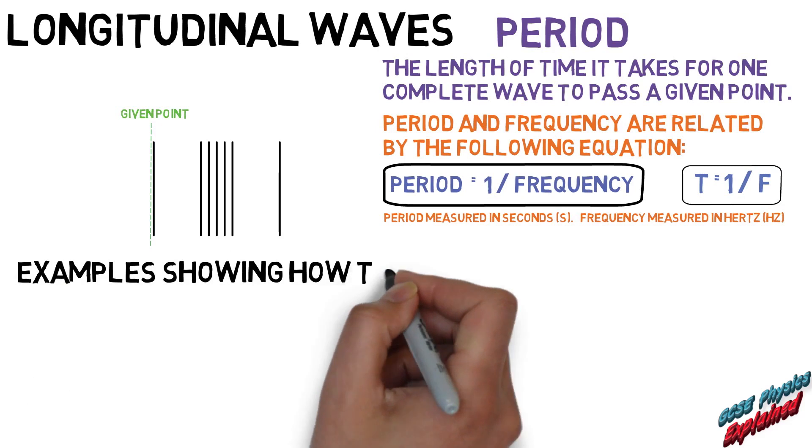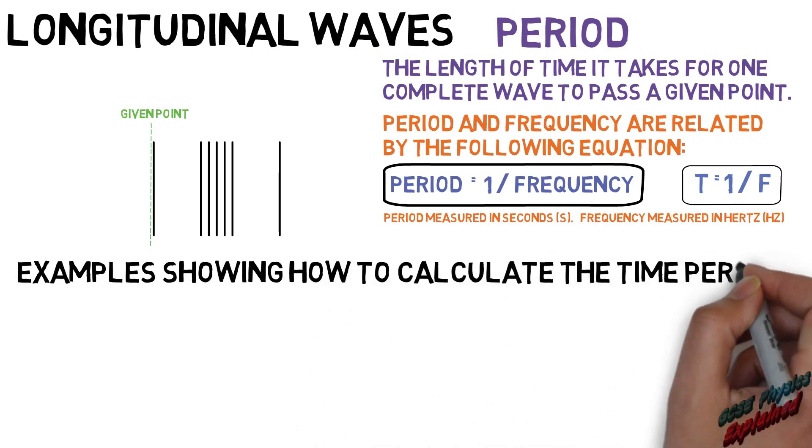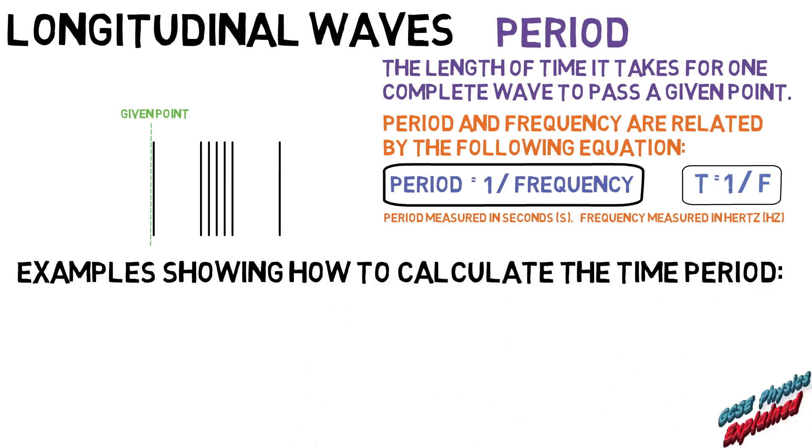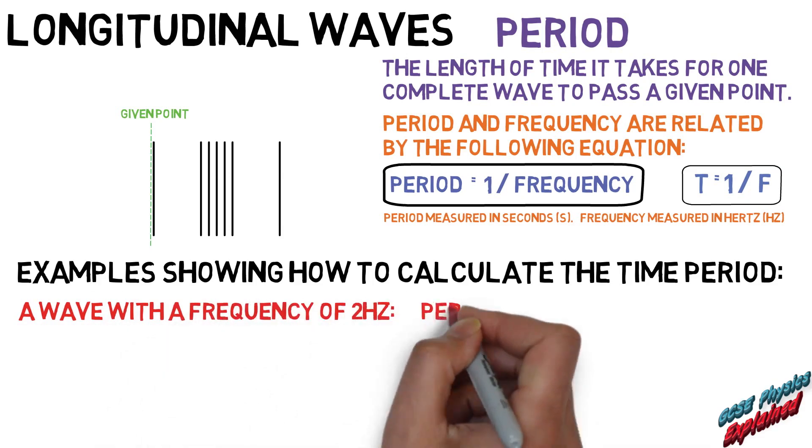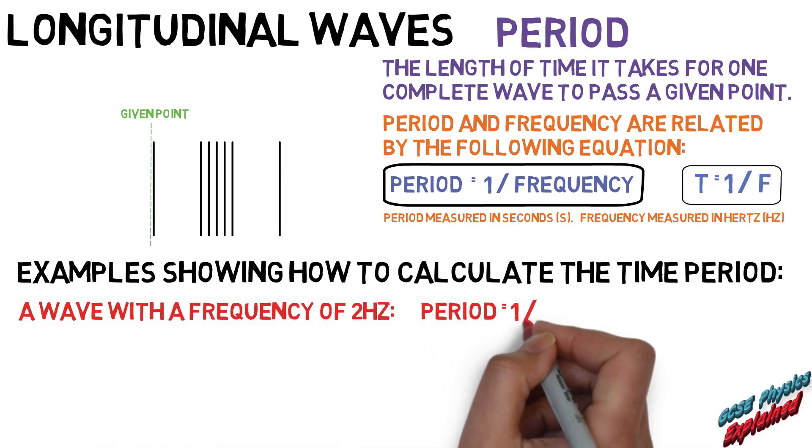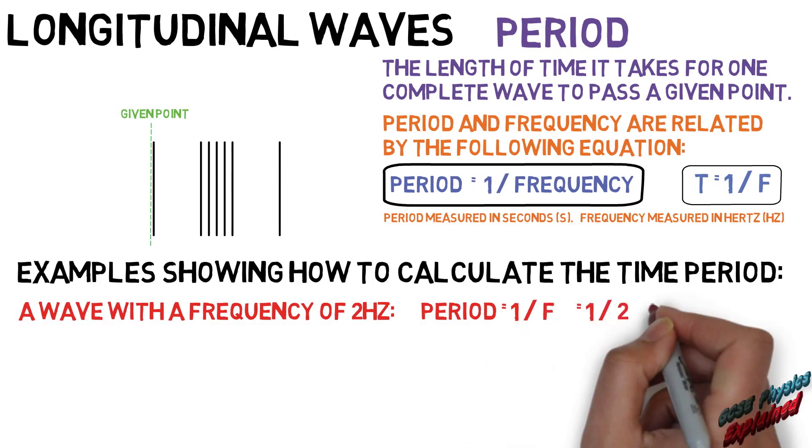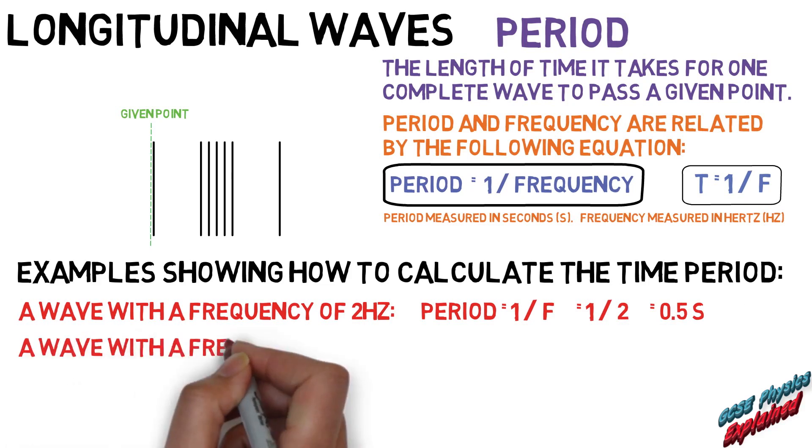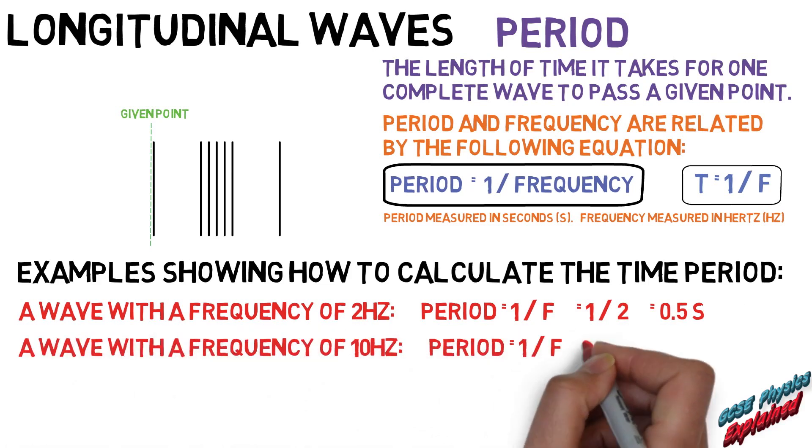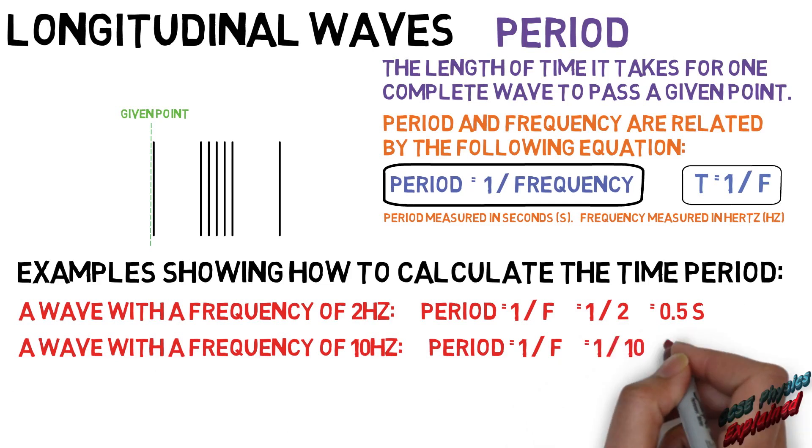Here are examples showing how to calculate the time period. A wave with a frequency of two hertz: period equals one divided by f equals one divided by two hertz equals 0.5 seconds. A wave with a frequency of 10 hertz: period equals one divided by f equals one divided by 10 hertz equals 0.1 seconds.